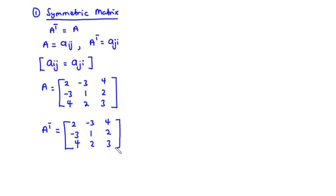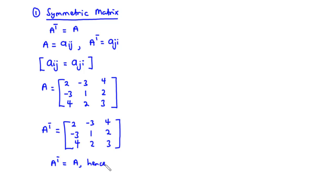For two matrices to be equal, they should have the same size and their corresponding elements should be equal. Comparing A and the transpose of A: row 1 gives 2, negative 3, 4 — matching 2, negative 3, 4; row 2 gives negative 3, 1, 2 — matching negative 3, 1, 2; row 3 gives 4, 2, 3 — matching 4, 2, 3. Since the two matrices have the same size and their corresponding elements are equal, the transpose of matrix A equals matrix A, hence matrix A is symmetric.